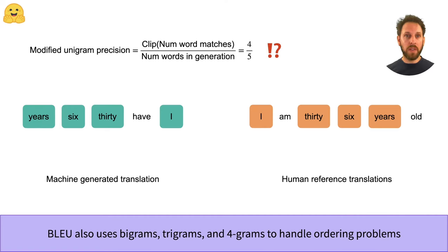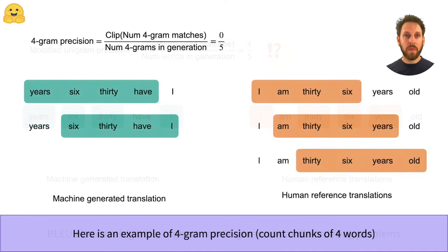Another problem with unigram precision is that it doesn't really take into account the order in which the words appear in the translations. For example, suppose we had Yoda translate a Spanish sentence — we might get something completely backwards like 'years 60 30 have I.' In this case the modified unigram precision gives a high precision, which is not really what we want. To deal with word ordering problems, BLEU actually computes the precision for several different n-grams and then averages the result. For example, if we compare four-grams we can see that there are no matching chunks of four words in the translations, and so the four-gram precision is zero.